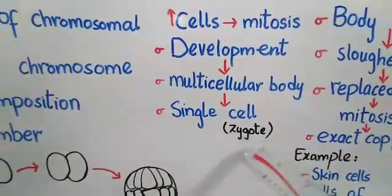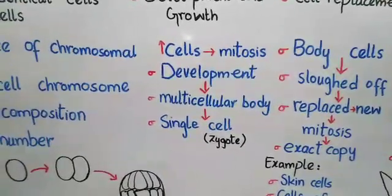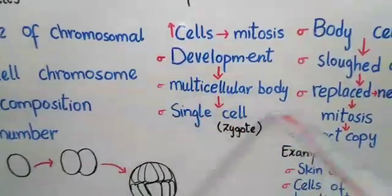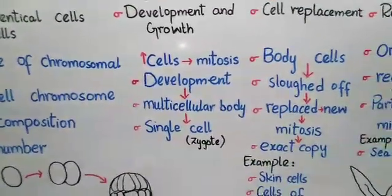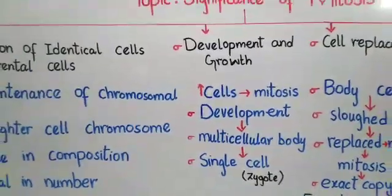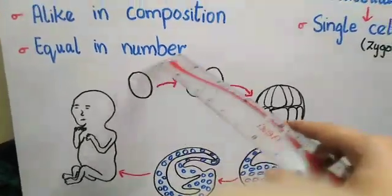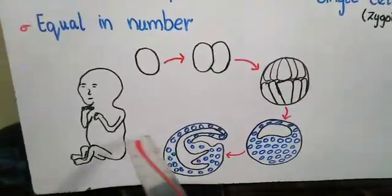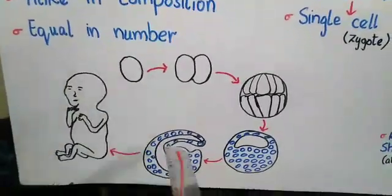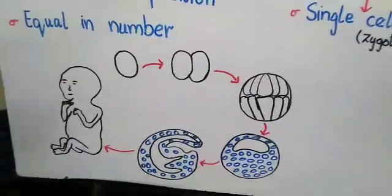The zygote is formed when male and female gametes fuse together. Male gametes are sperm, and when they fuse with female gametes, the resulting structure is called the zygote. The zygote is actually a single cell which is further developed into a multicellular body. This development process represents the growth role of mitosis, and the basis of growth of a multicellular body follows from this.